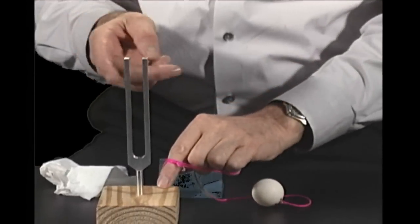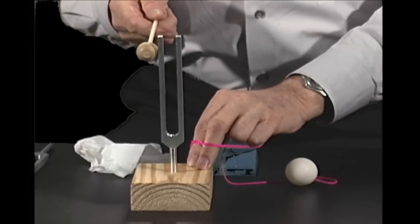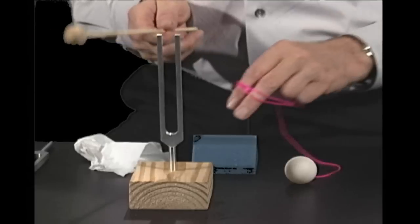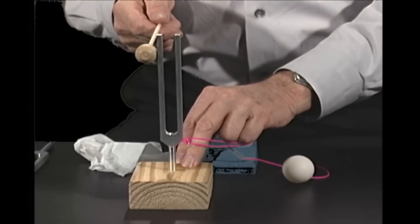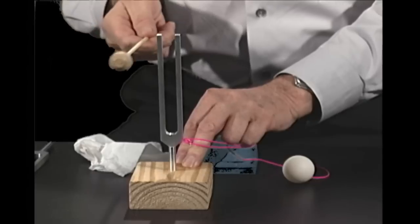Now, first off, I've got to get this tuning fork going. So I'll take my mallet here and give it a good strike. Now it's vibrating, but it's hard to see. So I'm going to do it again here, get it going. And this time I'm going to hang the ping pong ball right next to one of the tines. And let's watch what happens.